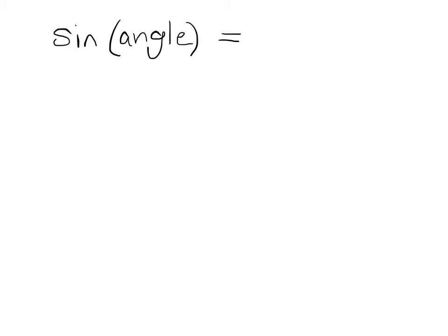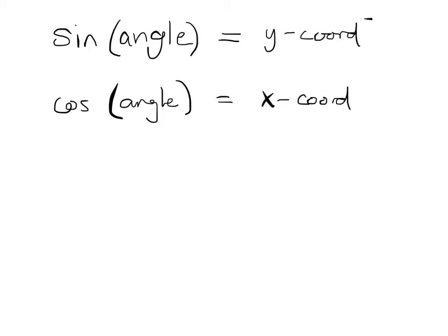Right? So sine of an angle gives me a y-coordinate. Specifically, and then cosine of an angle gives me an x-coordinate. And these things live anywhere from negative 1 to 1, right?